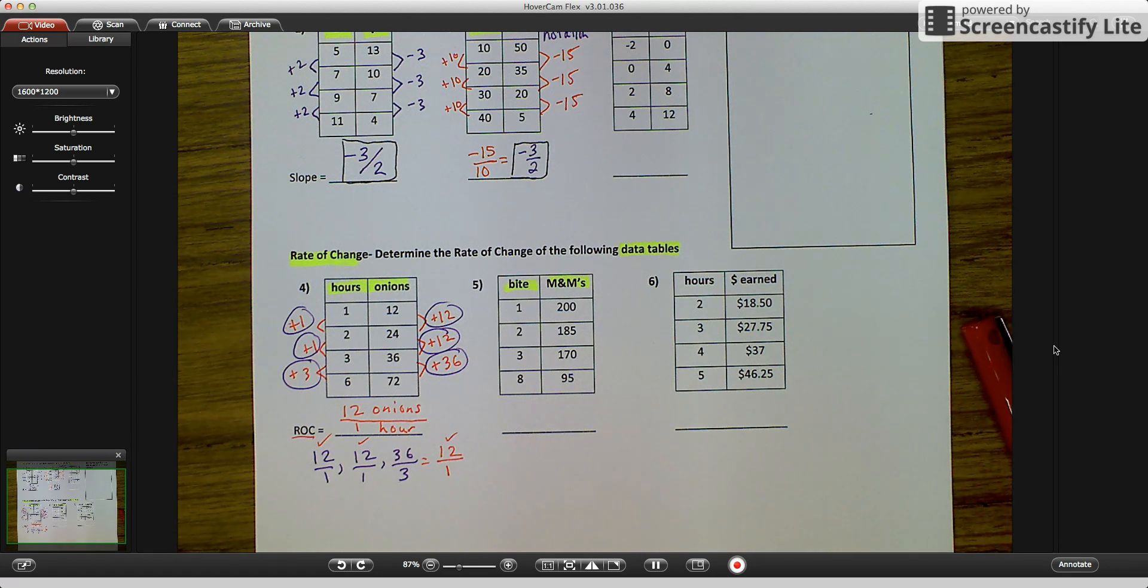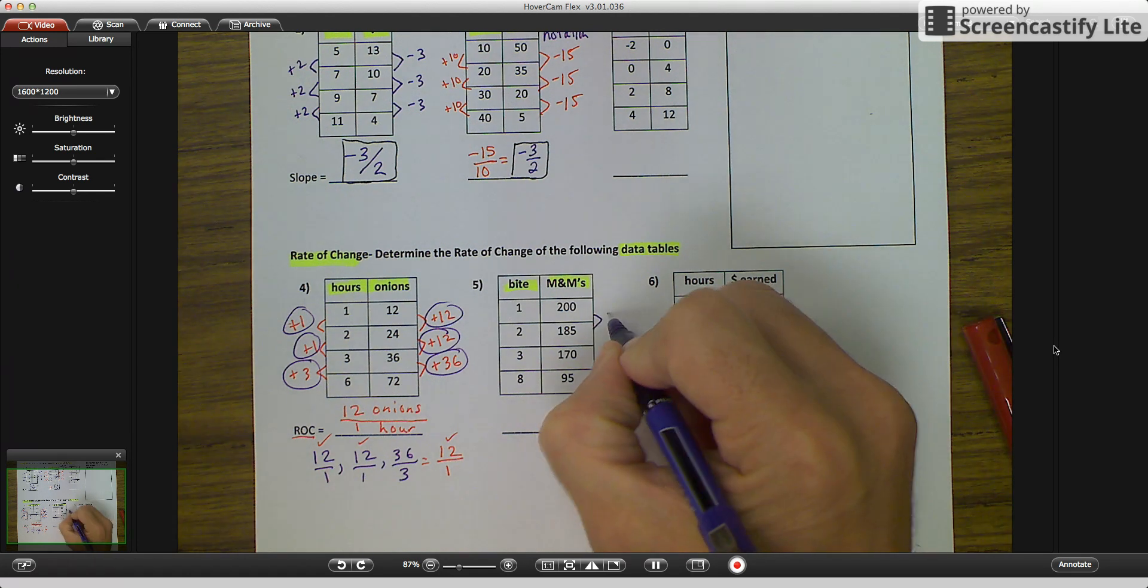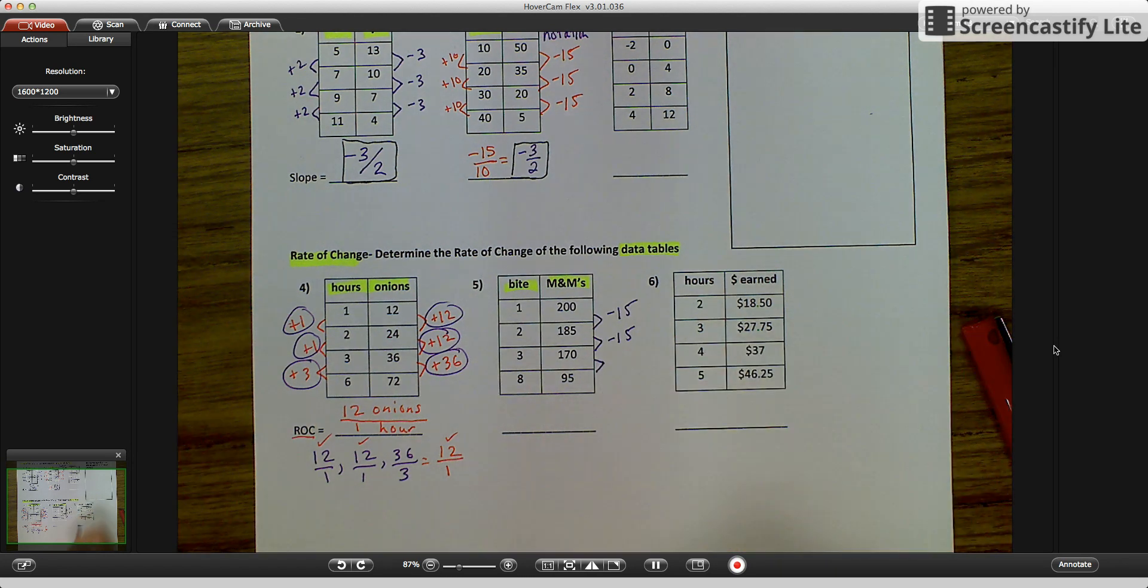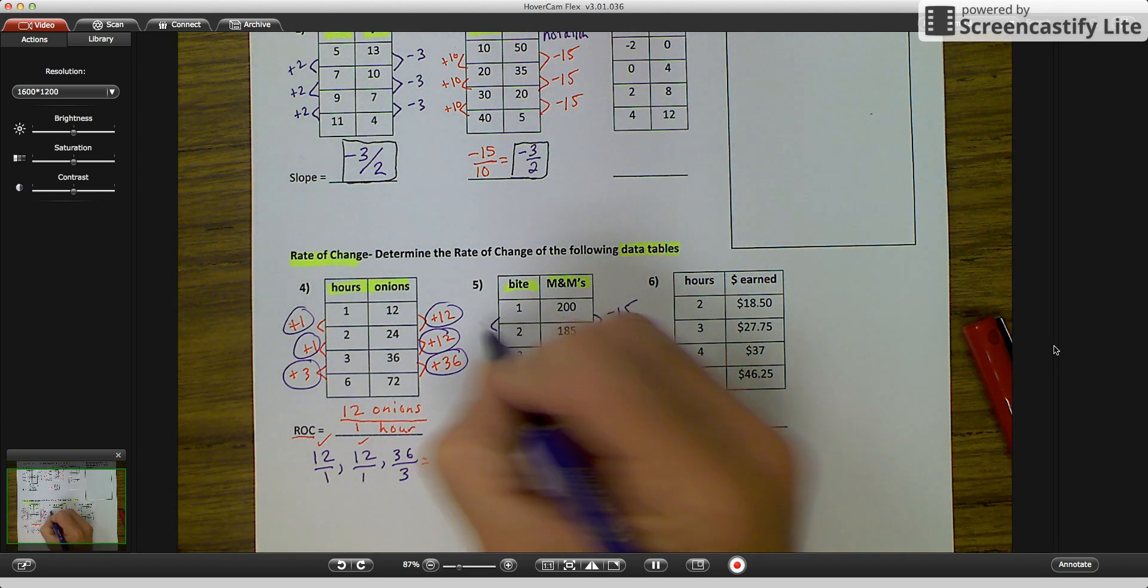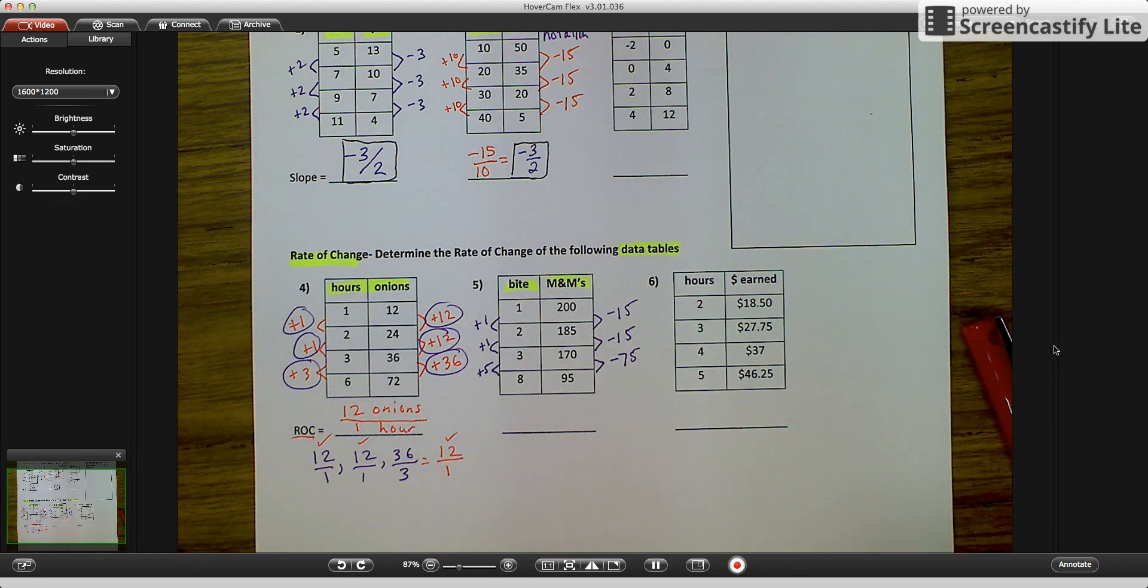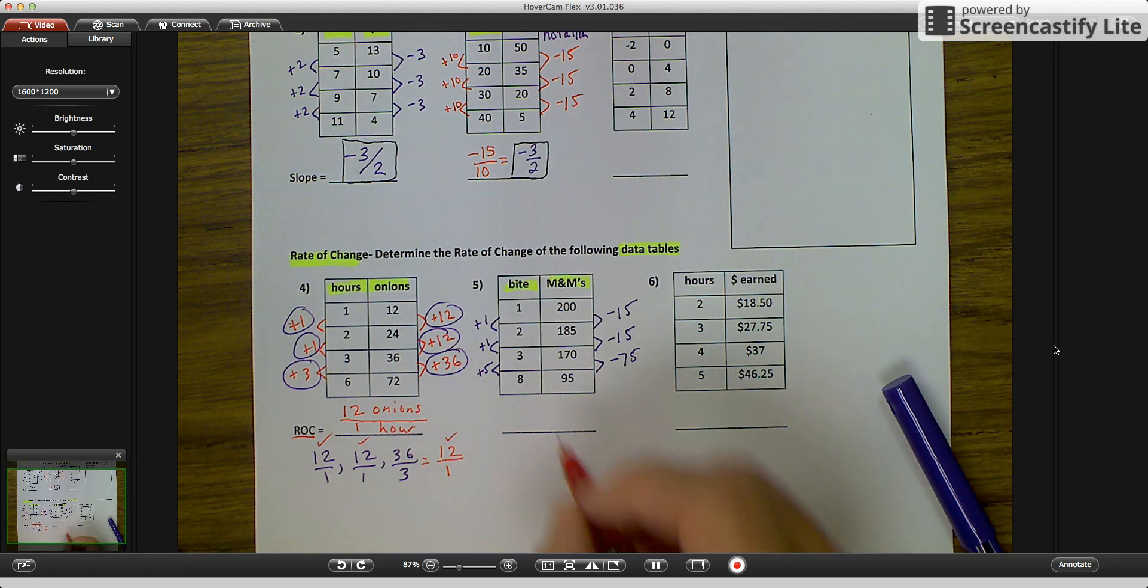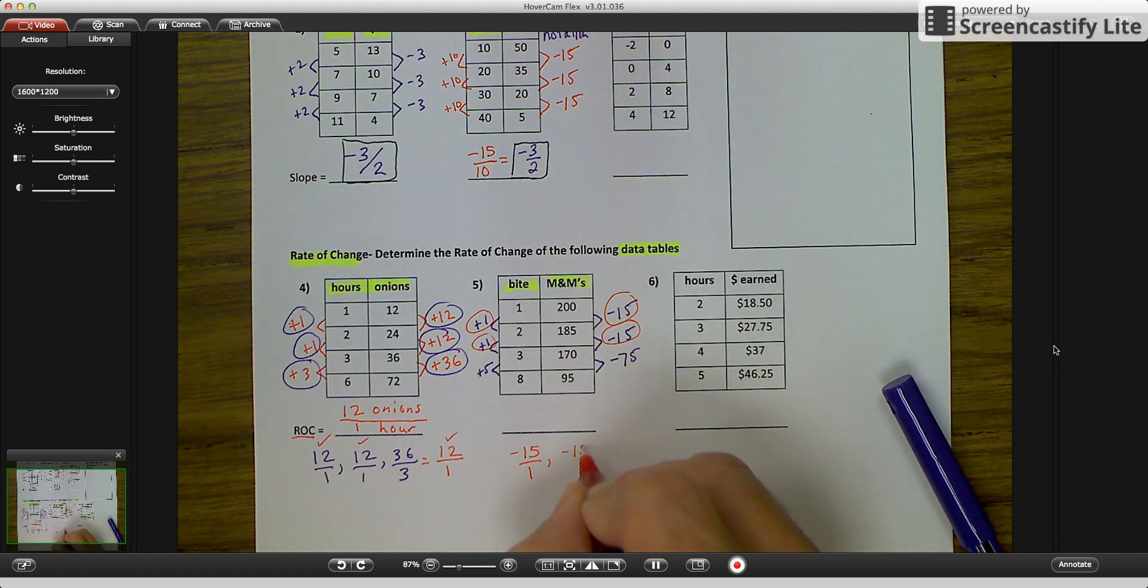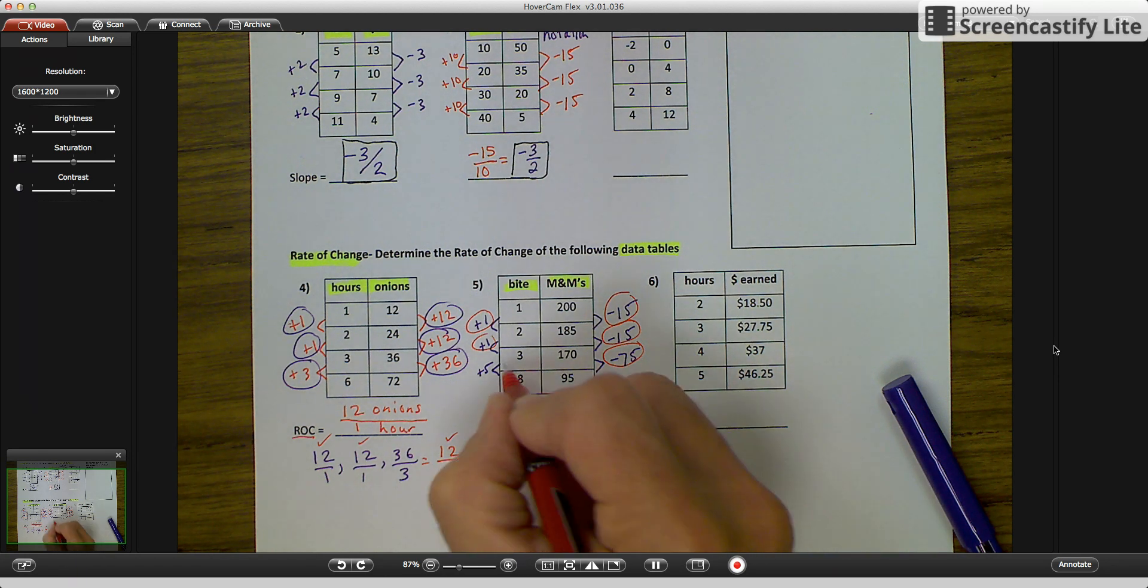For the fifth example, we're going to go through the same process. 200 to 185 would be a negative 15. 185 to 170, negative 15. 170 to 95, wow that's a big jump, and that's going to be minus 75. You can use your calculator if you need to. For my bites, we have 1 to 2 is plus 1, 2 to 3 is plus 1, 3 to 8 plus 5. And I'm going to go through the same process as I did in example number 4. I'm going to go negative 15 over 1, negative 15 over 1. My second set of values, my second rate of change, again, negative 15 over 1.